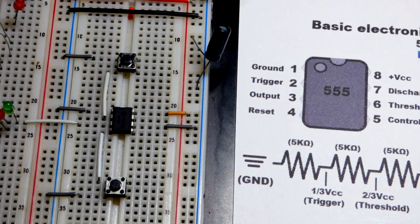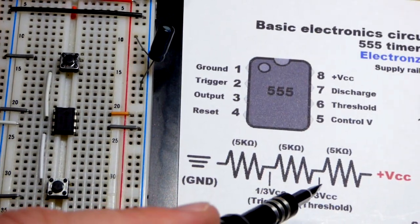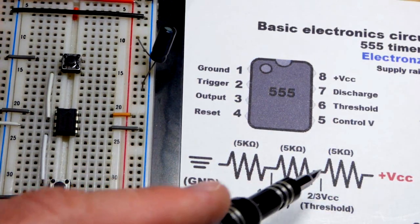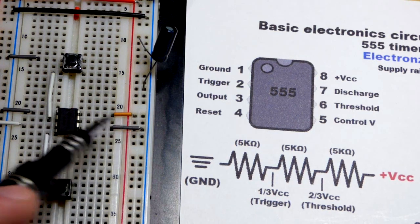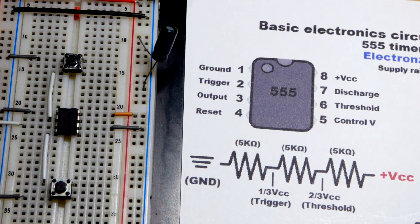The threshold pin now, that is waiting for this two-thirds voltage right there. And so to avoid it getting two-thirds or higher, we are doing the opposite that we're going to do with these other two pins. We're putting it directly to the negative rail. That will hold it low.